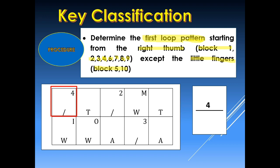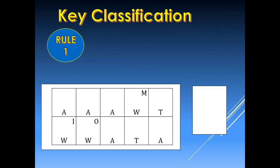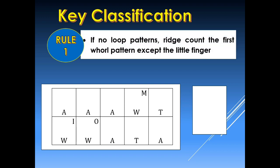Since we have already identified the ridge count in the final classification, the question is: what if there are no loop patterns among the 10 fingerprint patterns? The rule is — if there are no loop patterns, we ridge count the first whorl pattern, except the little finger. This is the same as the major classification, wherein if there are no available loop patterns, we ridge count the whorl pattern.